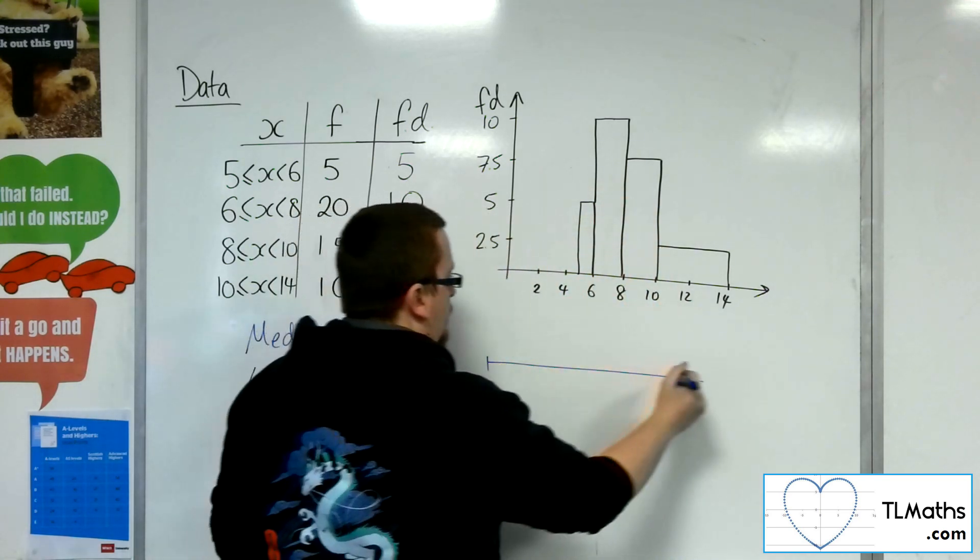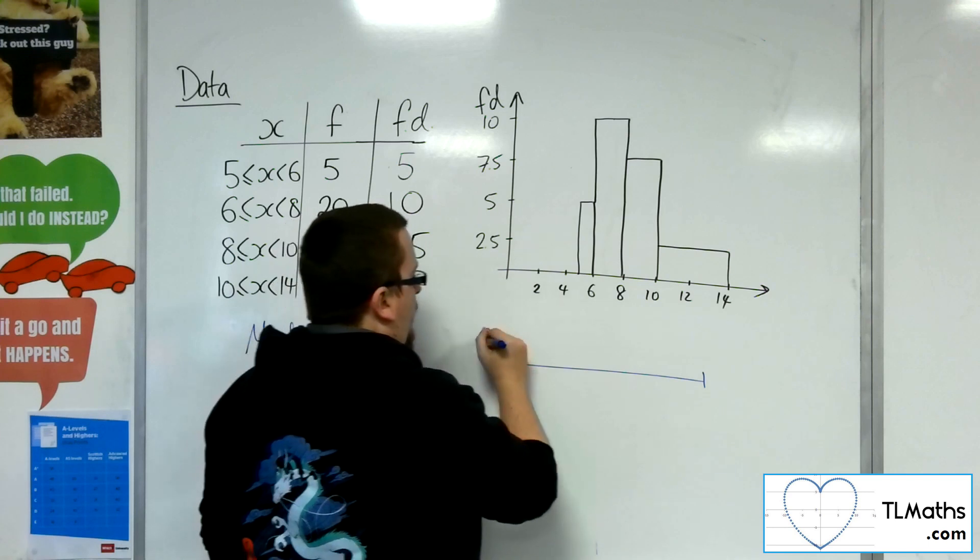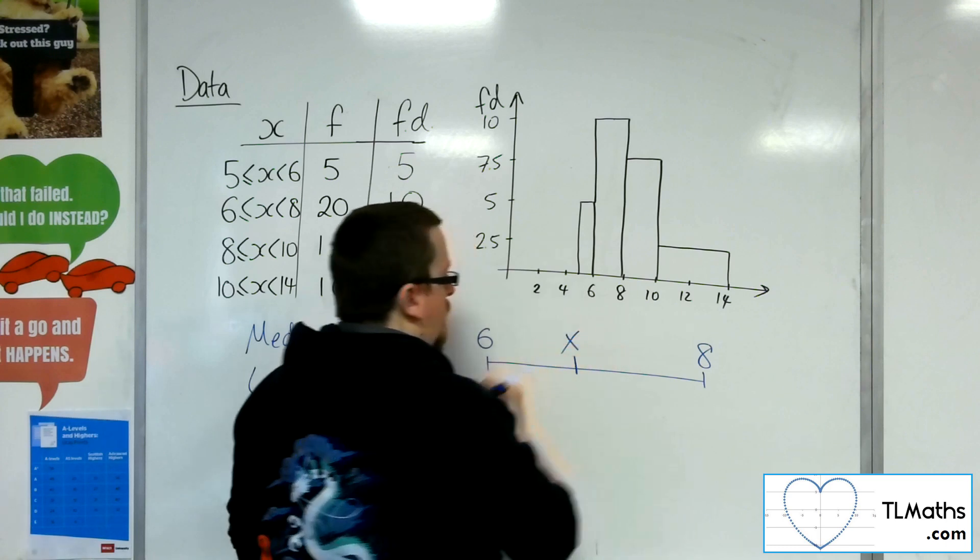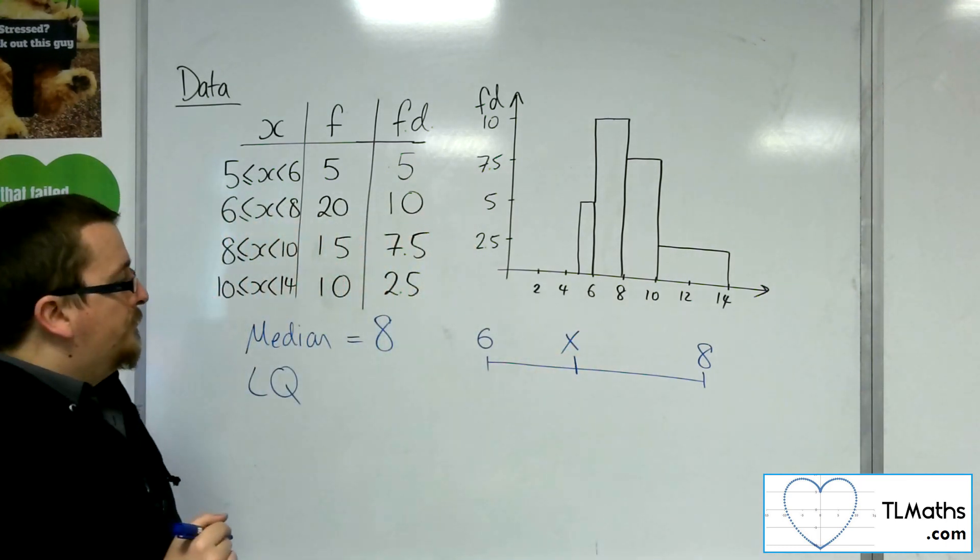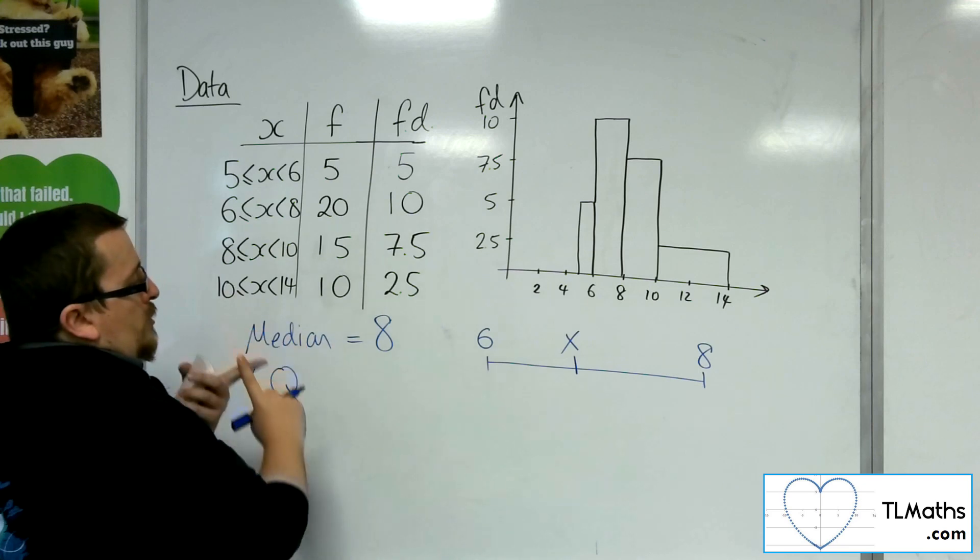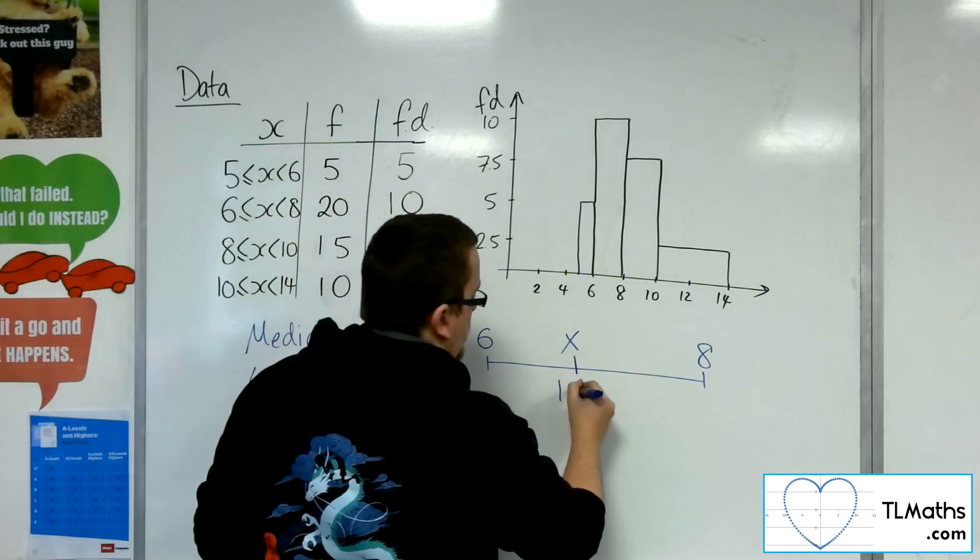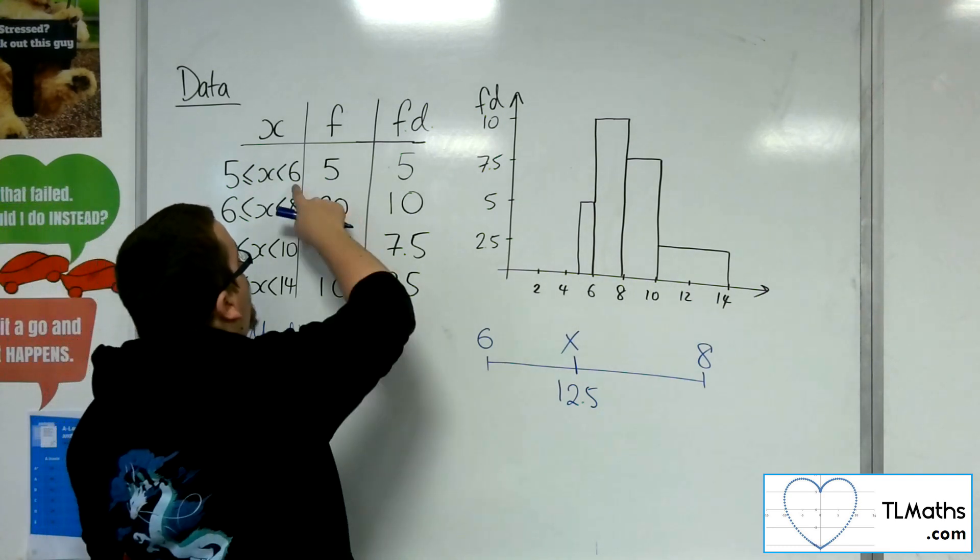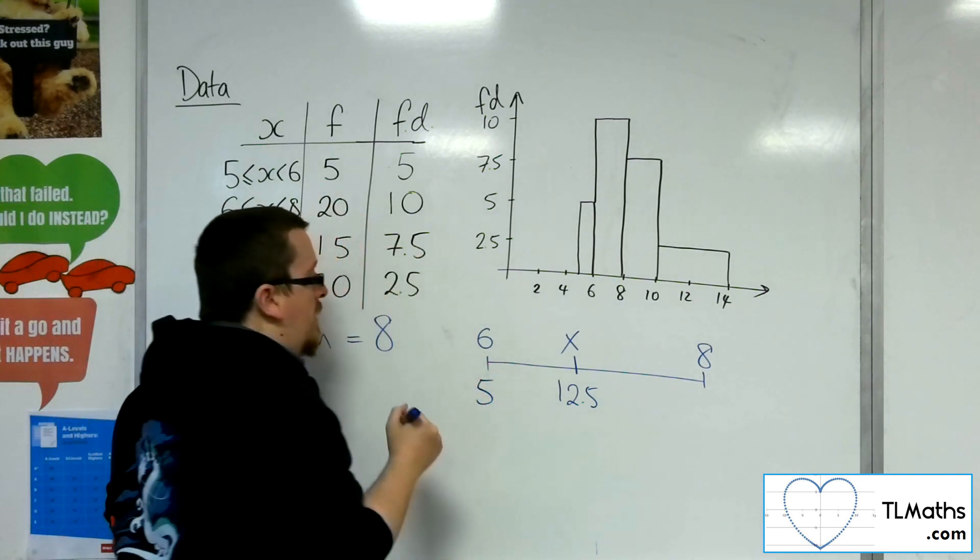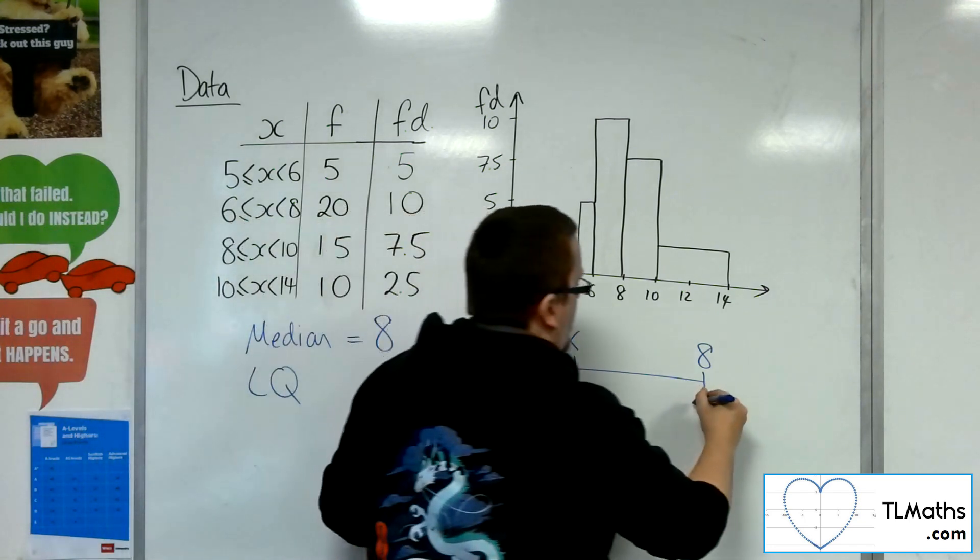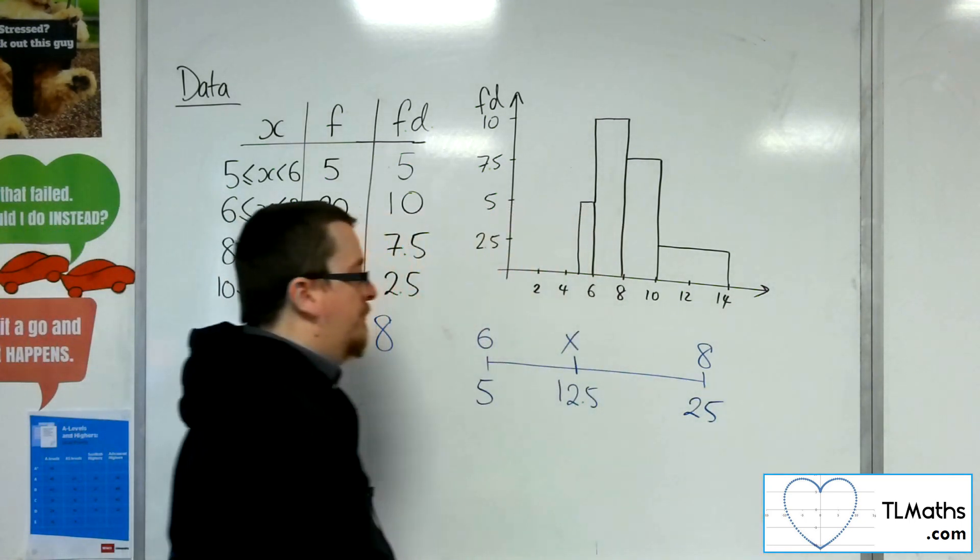So if I draw a number line going between the 6 and the 8, and the value that I want to find, I'll call x. Then for 12.5, I know that that's the 12.5th value along. I know that by the time I reach 6, I've gone through 5 data points. And by the time I reach 8, I've gone through 25 data points.